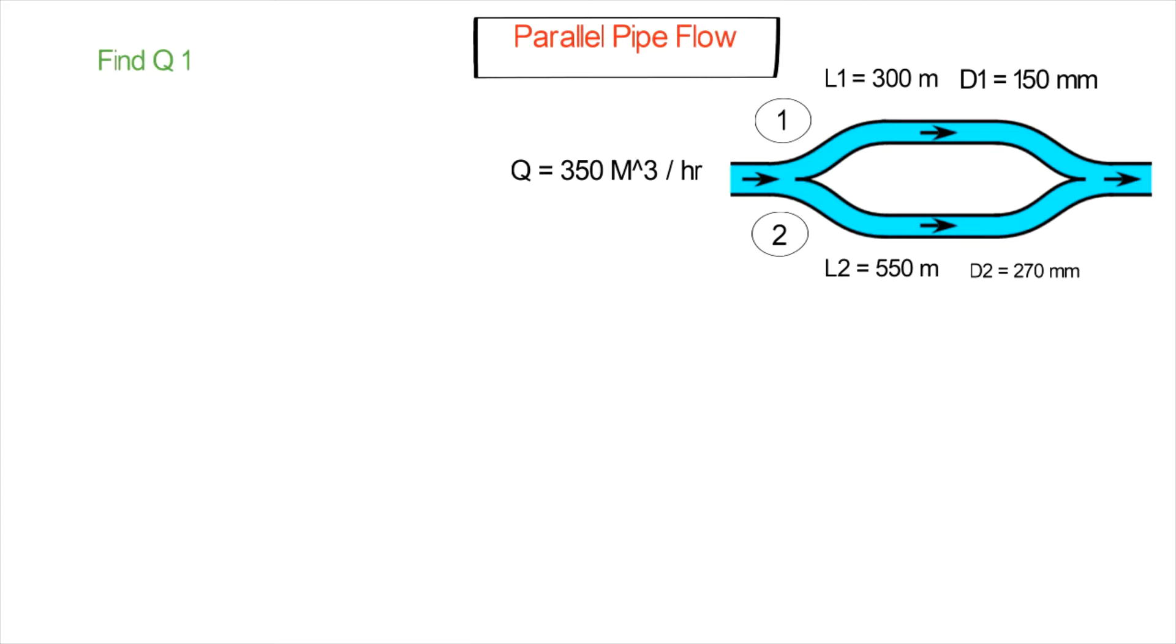We also have pipe two with length L2 equals 550 meters and diameter D2 equals 270 millimeters. Q1 is required, so before we start solving this problem, we need to discuss parallel pipe systems.